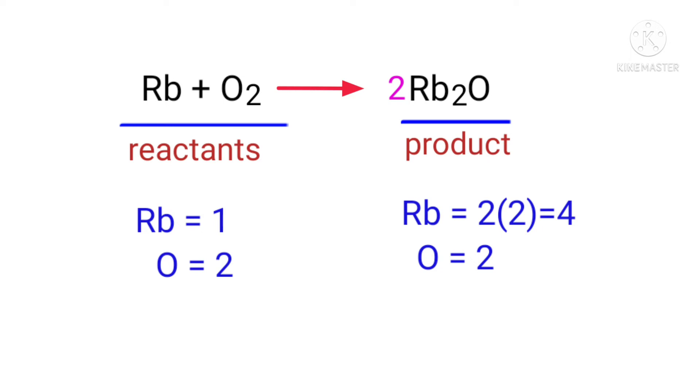Now we need to balance the Rubidium atoms. To do this we need to put a coefficient of 4 in front of Rb.